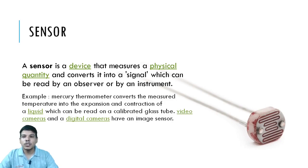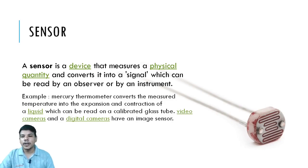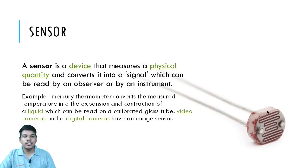In video cameras and digital cameras, we use sensors for image recognition and video recording. This is a photo of the photo resistor sensor, which we will use in a further project.